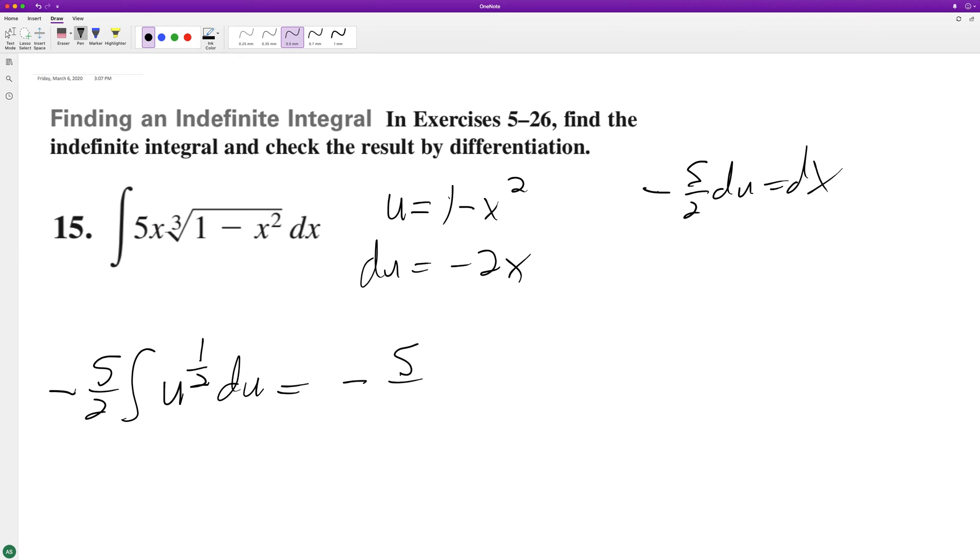So we have negative 5 halves, 3 halves over 3 halves, which just becomes 2 thirds, 5 thirds. So negative 5 thirds.